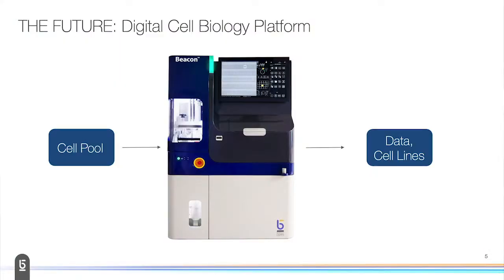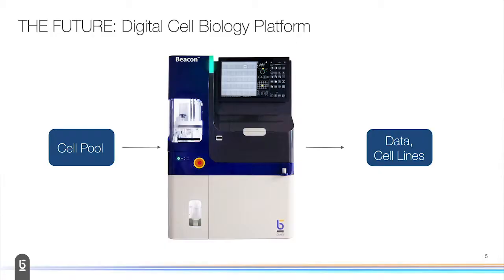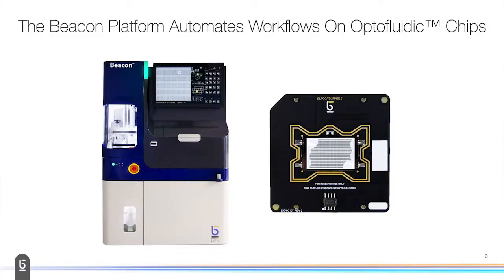This is the platform that we've built, and we call it digital cell biology. Essentially, the way that our workflows work is that we usually come in with a cell pool, usually a diverse set of cells. This is an image of the Beacon platform. It's about the size of a minus 80, and we try and do almost the entire workflow within that single platform, all computer controlled, which is why we call it digital cell biology. The result is either data or actual cell lines coming out the other side in a well plate.